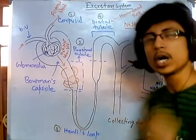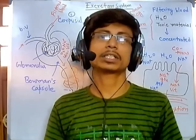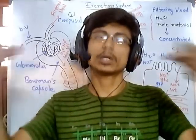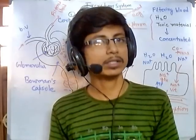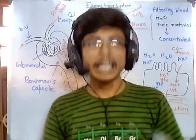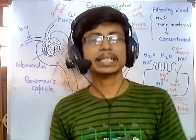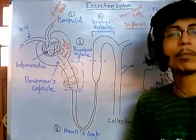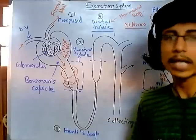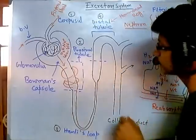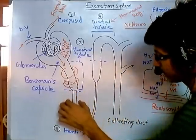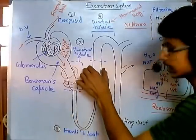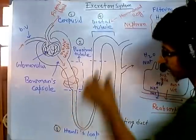Henley's loop creates a concentration gradient so that less water remains and more electrolytes and toxic materials are dissolved — making the urine more concentrated. Less water means more concentrated. The loop is divided into three sections: the descending loop, then the ascending loop, and then a slightly thicker ascending loop region.